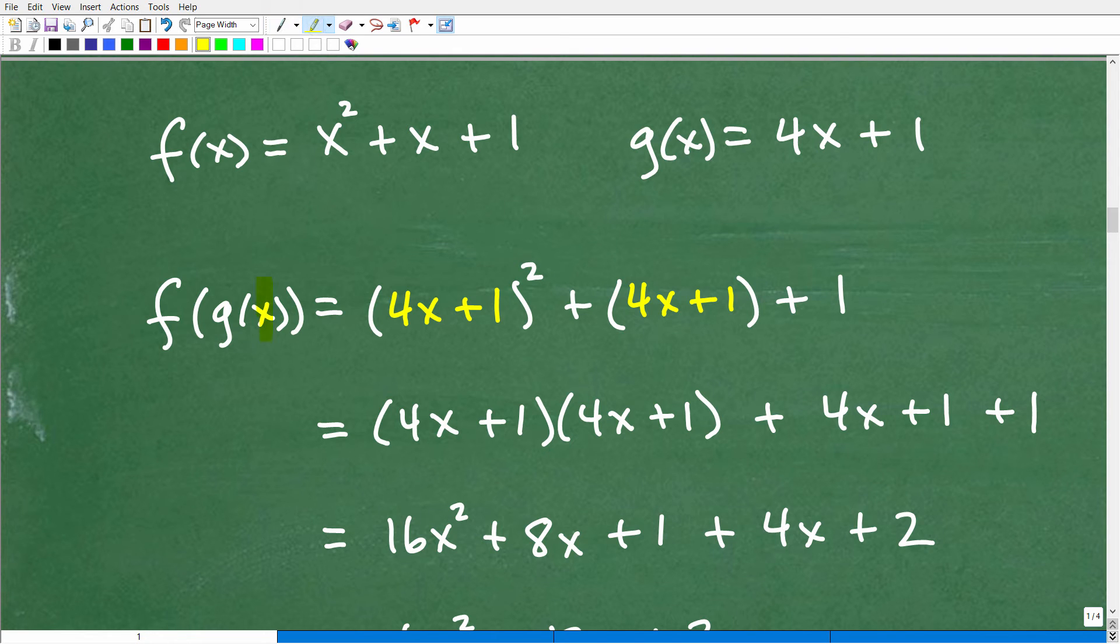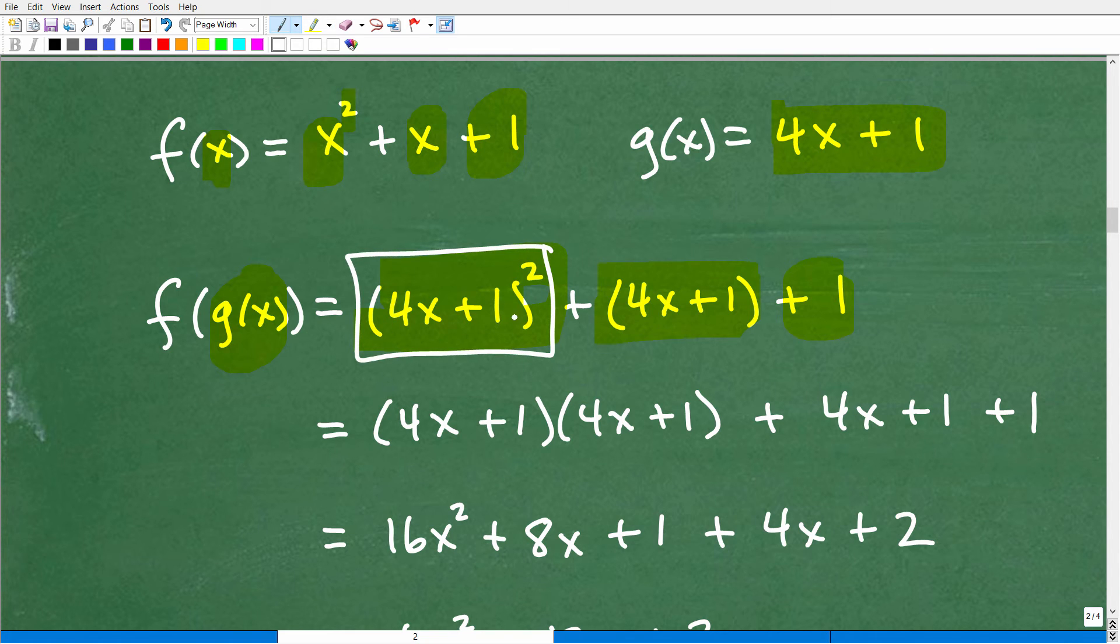Okay, so we want you to go ahead and find f of g of x. So f of g of x, we're going to plug into the f of x function, we're going to replace these x's right there with the g of x function. The g of x function happens to be 4x plus 1. So we're going to have 4x plus 1 squared, that's this right here, plus this x, that's another g of x function, which is 4x plus 1 right there, plus 1.